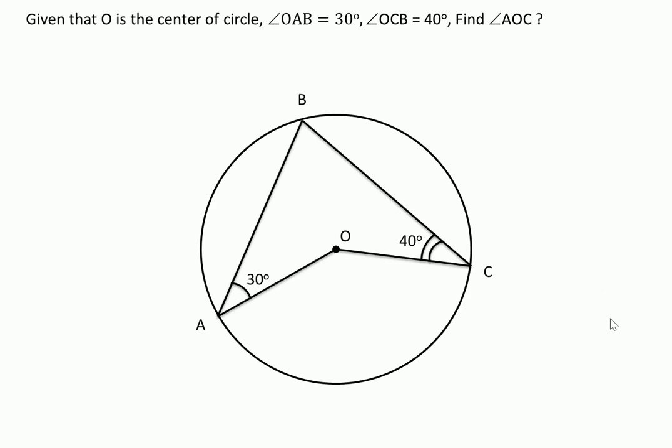we will start with the radius of circle. OA is the radius of circle because O is center and A is the point on the circumference of circle. Similarly, OC is also the radius of circle.